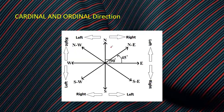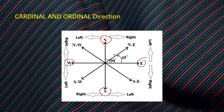Before going to discuss the questions, we have to learn the cardinal and ordinal directions. There are four cardinal directions: North, South, East, and West. In between these four, there are also four ordinal directions. Between North and East there is Northeast, between North and West there is Northwest, and similarly Southwest and Southeast.